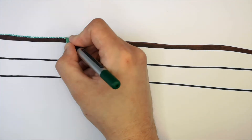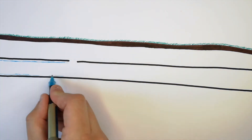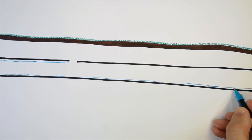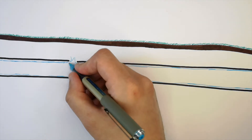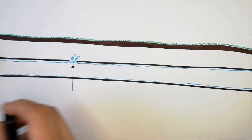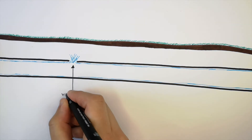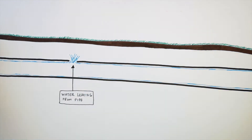What I'm drawing here is an underground water pipe. This is the pipe with a hole in it, and it is beneath the ground. So water is going to leak from the pipe, as I'm showing here — water is leaking from the pipe. So how would you use gamma radiation to identify where the leak is?